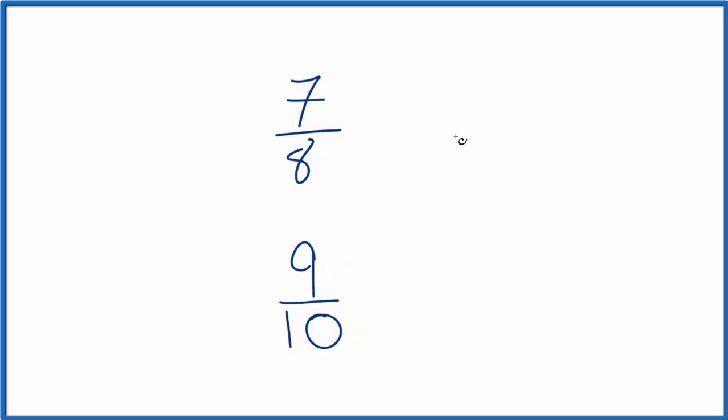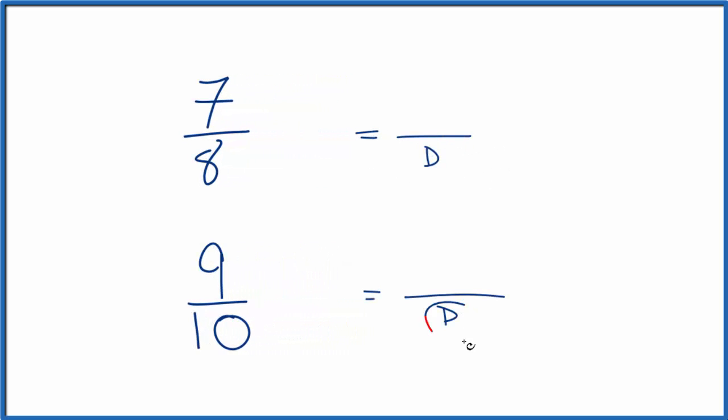First, we could find a common denominator. So if we could find a number that's the same on the bottom of these fractions, then we just compare the numerators. Whichever numerator is larger, that's the larger fraction. So let's do that first.